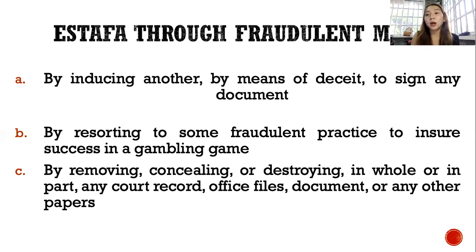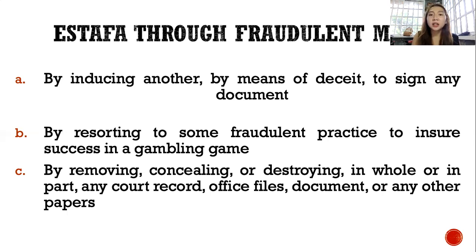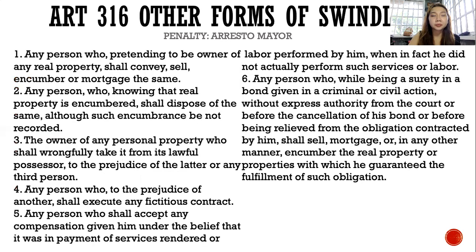Note that Article 332 — the exempting circumstance — applies exclusively to simple crimes of theft, swindling, and malicious mischief. The exemption under Article 332 will not apply if the crime committed is a complex crime. This is relevant to the son-in-law case, which will be discussed under Article 332.